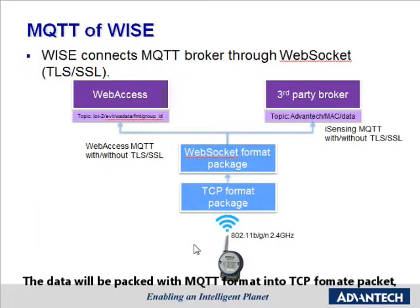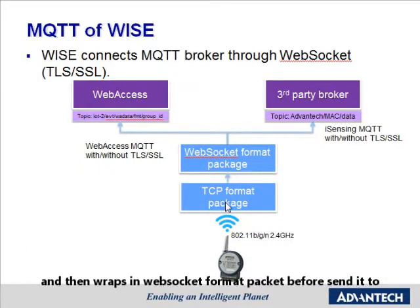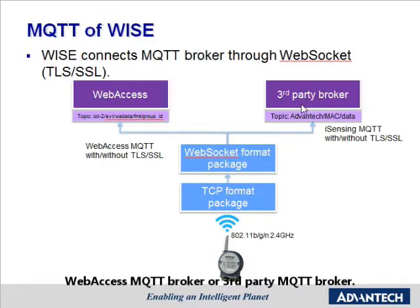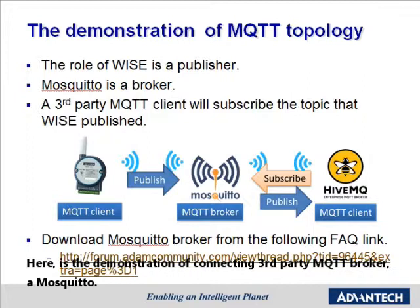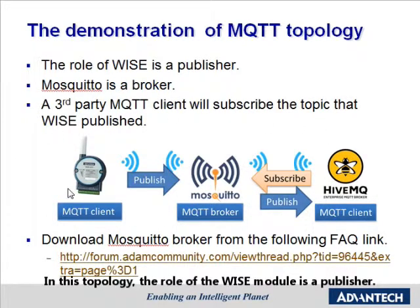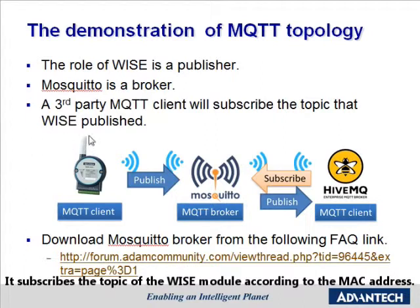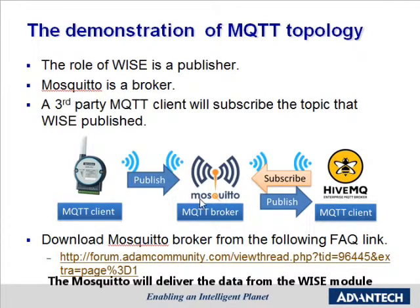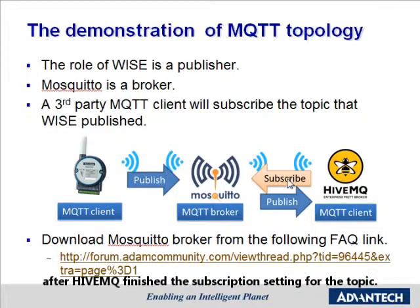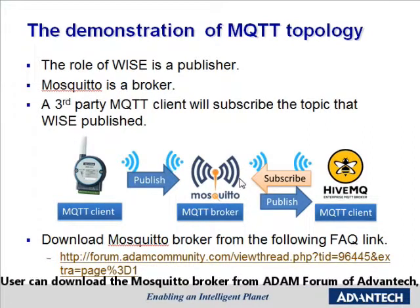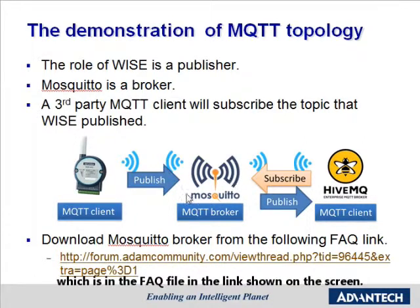The data will be packed in MQTT format into a TCP format package, and then wrapped in a WebSocket format package before being sent to the WebSocket MQTT broker or a third-party MQTT broker. Here is a demonstration of connecting to a third-party MQTT broker, Mosquitto. In this topology, the role of the WISE module is a publisher, Mosquitto is the MQTT broker, and a third-party MQTT client, HIFNQ, is the subscriber. It subscribes to the topic of the WISE module according to the MAC address. Mosquitto will deliver the data from the WISE module after HIFNQ finishes the subscription setting. Users can download the Mosquitto broker from the AIDAN forum of Advantech, in the FAQ file at the link shown on screen.